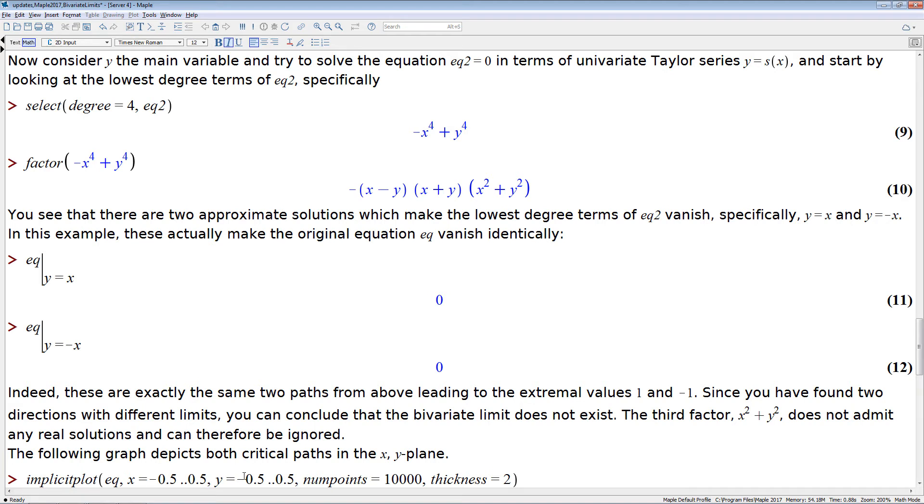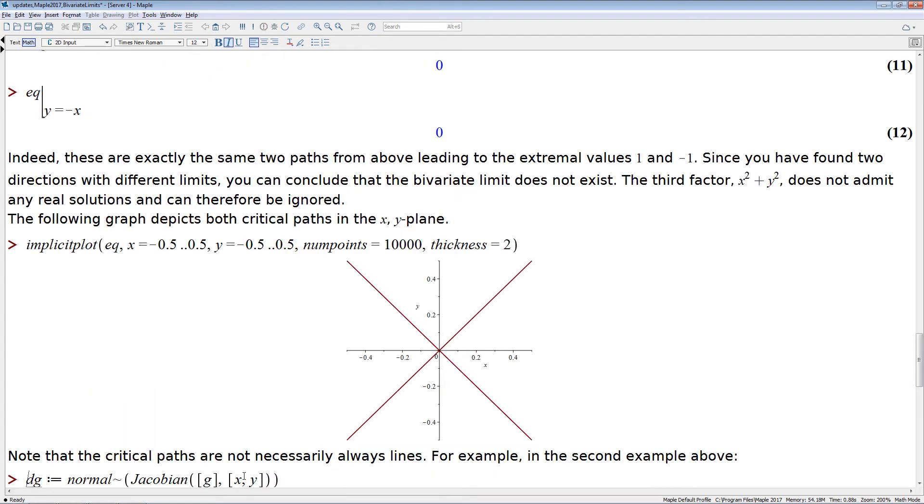So we've actually found, and that was a bit of luck because all we had to look at was the low degree part of the Taylor expansion, we found computationally the critical curves, and we can plot them, and those are the two diagonals. And so in this case, the critical curves are actually lines, but that is not the case in general.